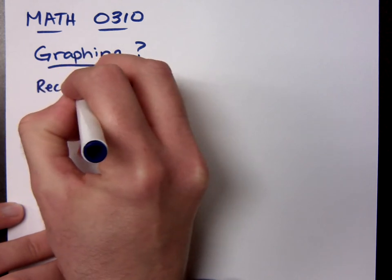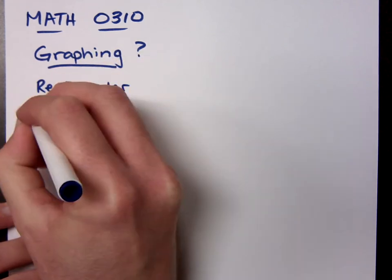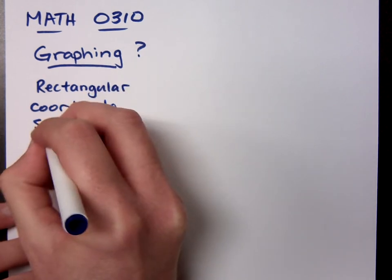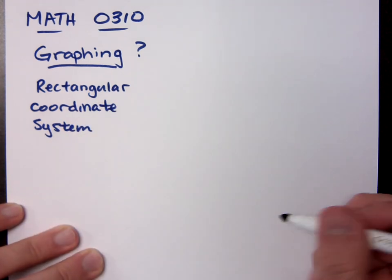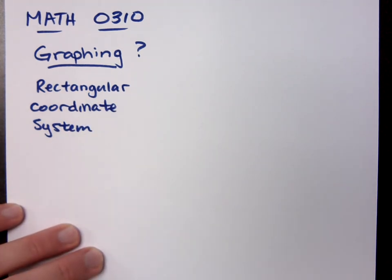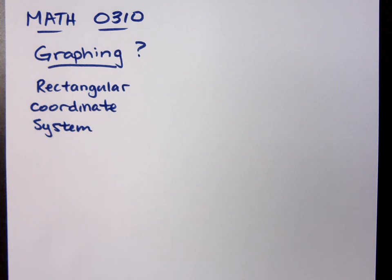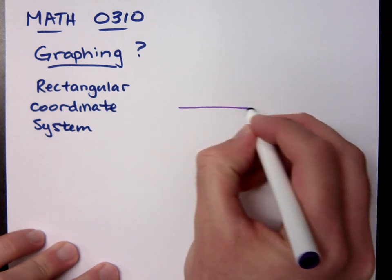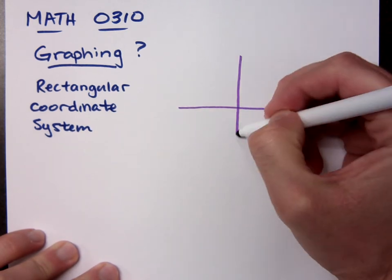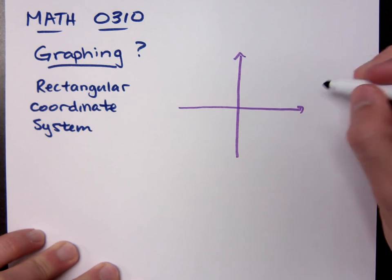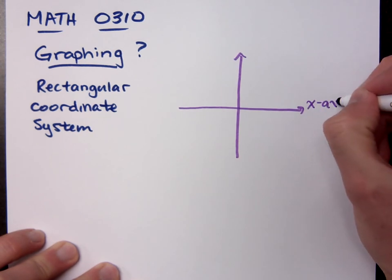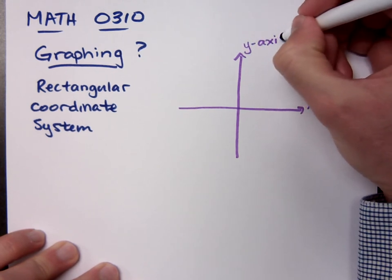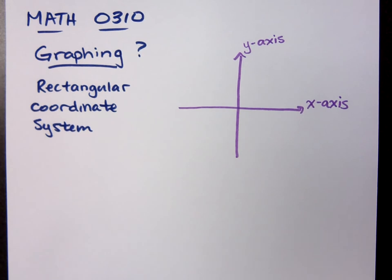Remember, we talk about the rectangular coordinate system. What do you remember about that? Or do quadrants form? We have the x and y axes, right? Remember, this is the x-axis. And the one going up and down is the y-axis. Does that look familiar? You guys can see that?